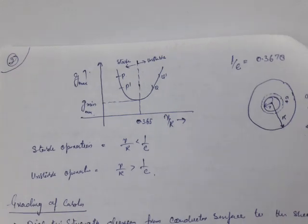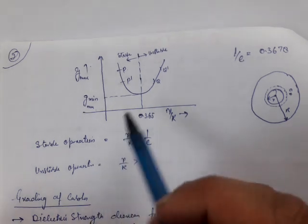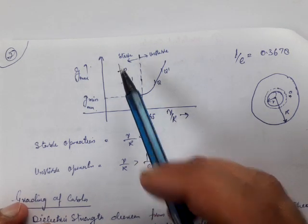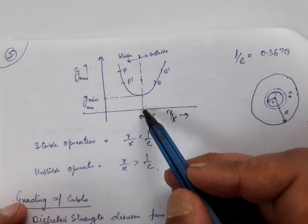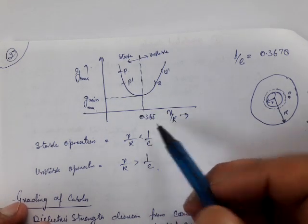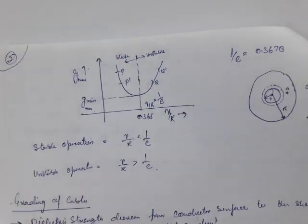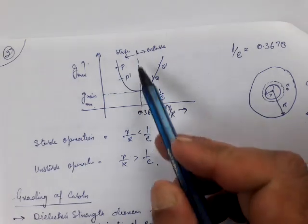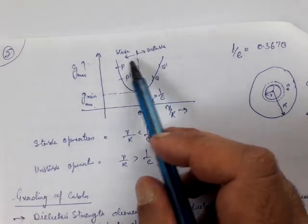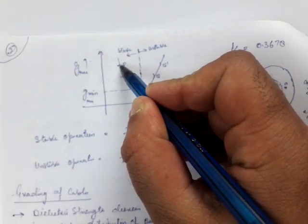Now I will discuss the stability of the dielectric. This is the curve of G_max with respect to r/R. The minimum point occurs when r/R equals 1/e, which is approximately 0.367. The curve is divided into two parts: a stable region and an unstable region. Let us say our dielectric is operating at point P.